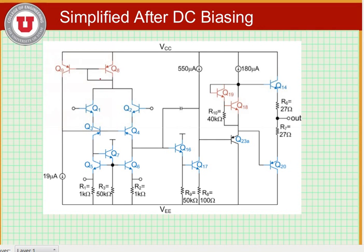Alright, so now that we've gotten the basic DC biasing transistors out of the way, we're going to figure out the DC bias for the input stage, consisting of transistors Q1 through Q7.